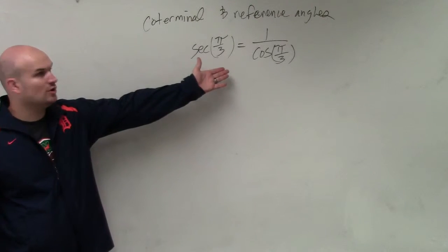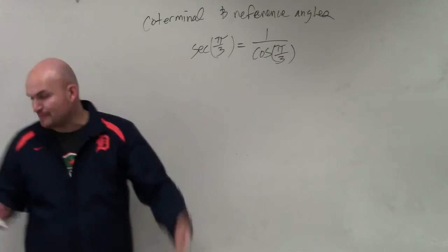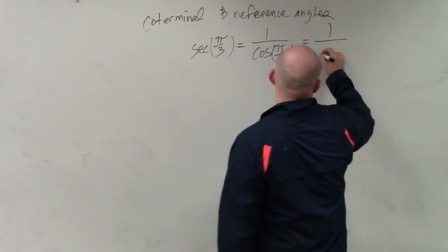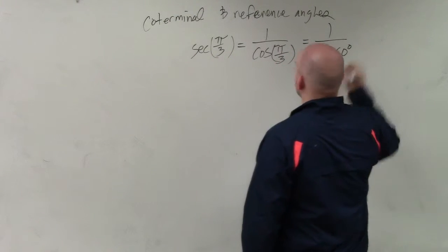So in this one, we have secant of π over 3. Now, you might not remember π over 3, and you can see that π over 3 is equivalent to 60 degrees. So it's basically 1 over the cosine of 60 degrees.